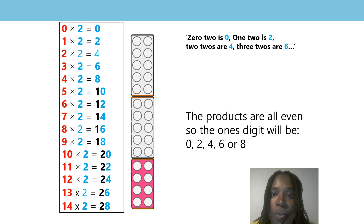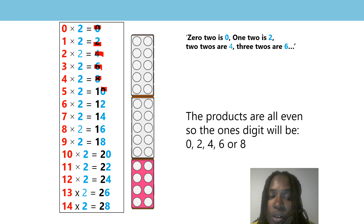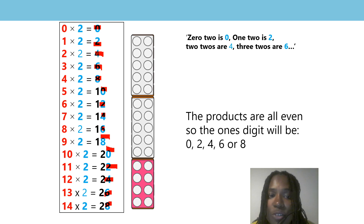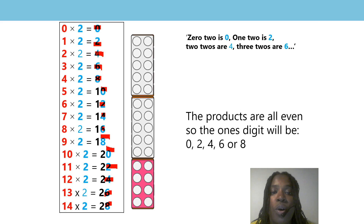Is the pattern still there? Can you still spot the pattern of 0, 2, 4, 6, 8? Is it still there? That's right — it is still there. And that is because the products are all even, so the ones digits will be 0, 2, 4, 6, or 8. Great job!